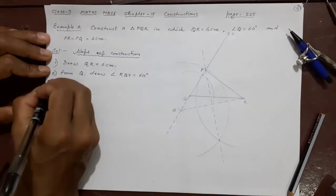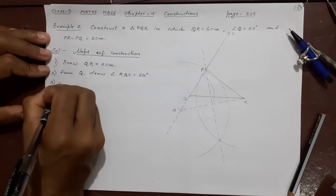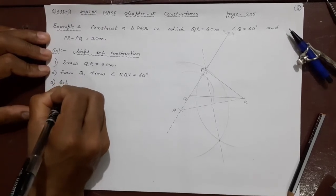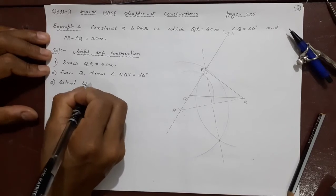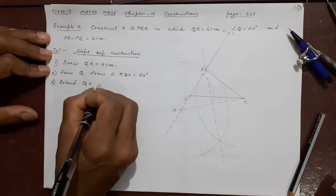Number 3 extend Qx such that QA is 2 cm below.